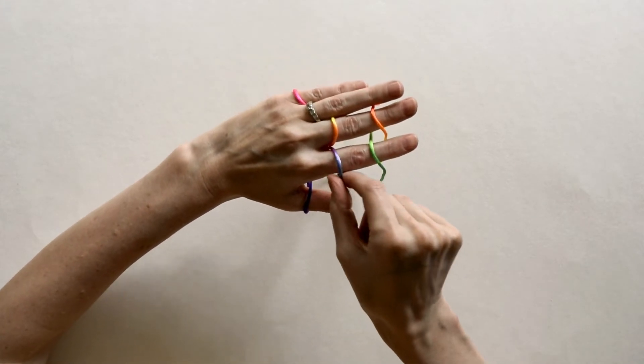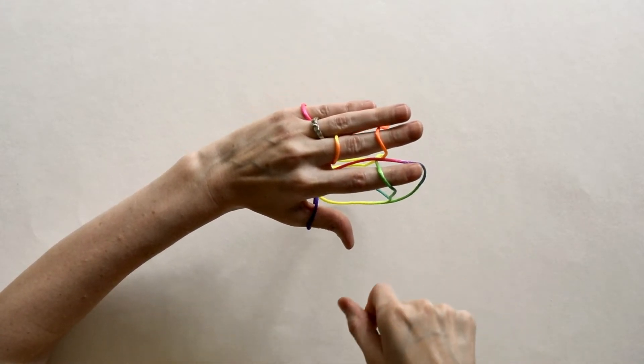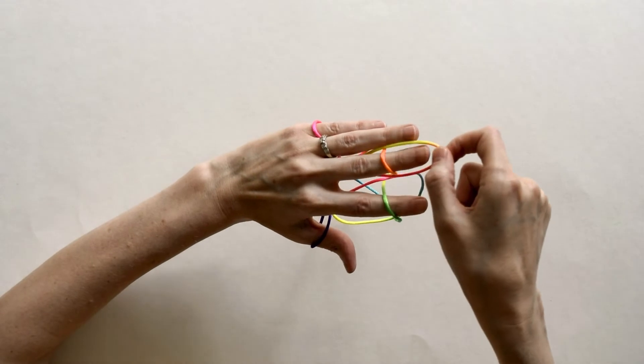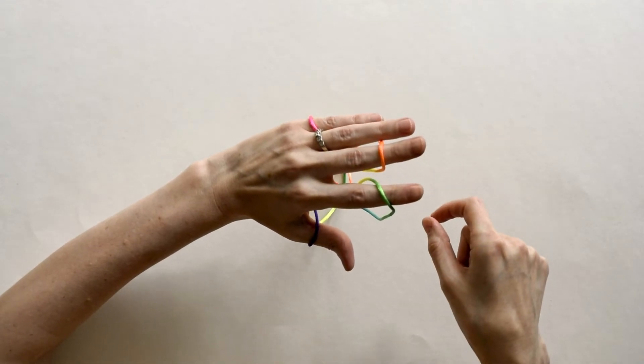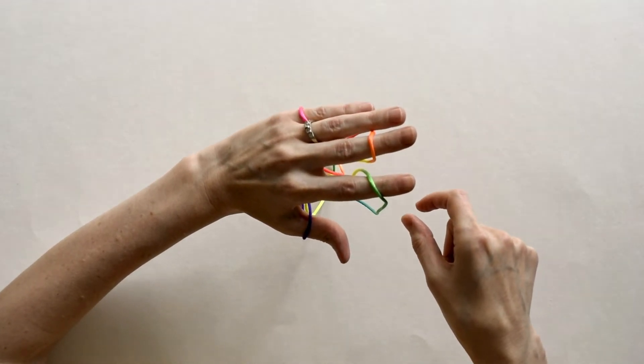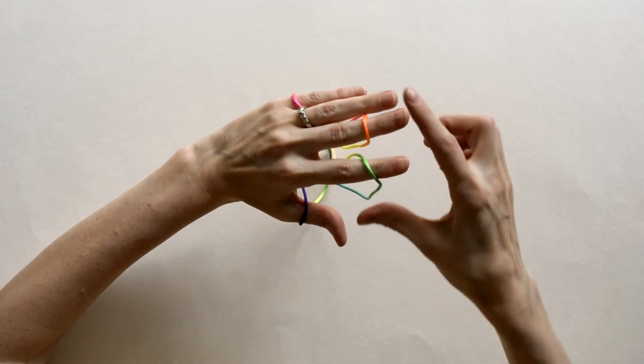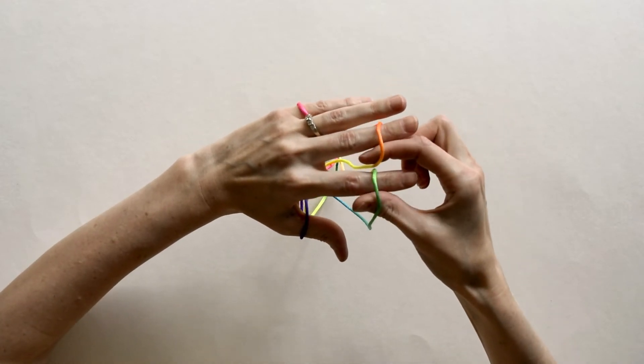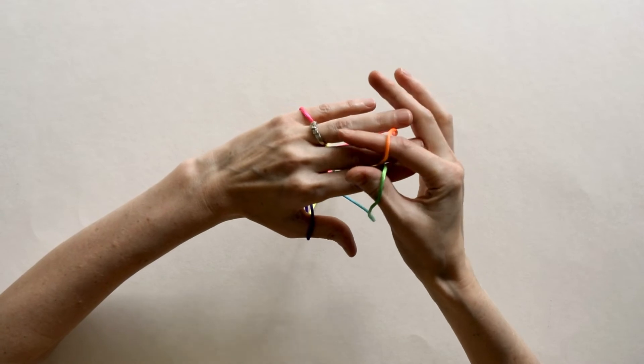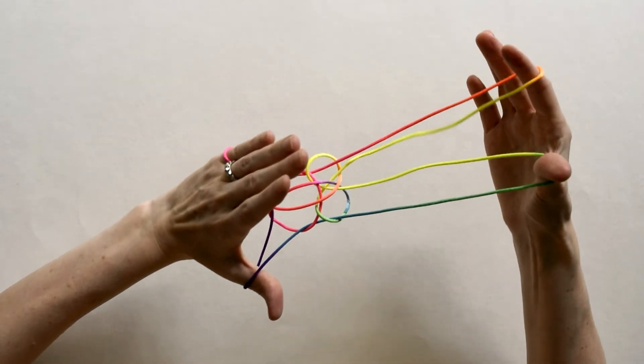Now take the bottom loops on your index off and over the other loop, same with the middle, off and over the new loop you put on. Now take your right hand and you're going to use your index and thumb to take the index and middle off your left.